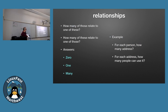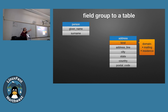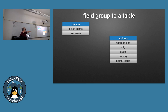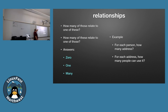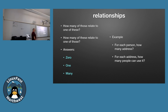Now let's talk about relationships between tables. When you do database analysis, you end up asking these questions: how many of these relate to those, and how many of those relate to these? For the person and address example: for any one person, how many addresses can they have? And for each address, how many people can it belong to? The answers are always zero, one, or many — that's what we're looking for in database analysis.